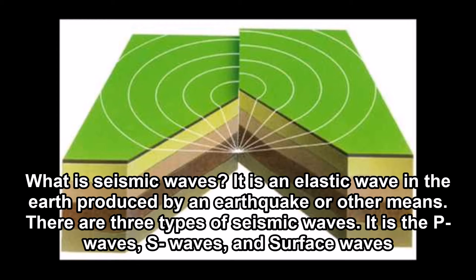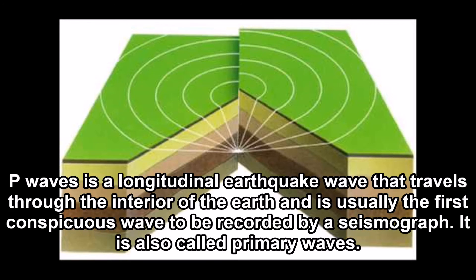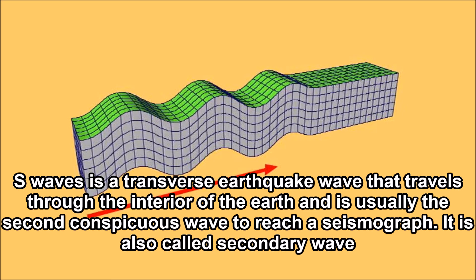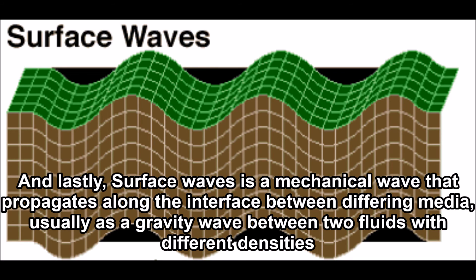A seismic wave is an elastic wave in the earth produced by an earthquake or other means. There are three types of seismic waves: P waves, S waves, and surface waves. P waves are longitudinal earthquake waves that travel through the interior of the earth and are usually the first conspicuous wave recorded by a seismograph; they are also called primary waves. Surface waves are mechanical waves that propagate along the interface between differing media, usually as gravity waves between two fluids with different densities.